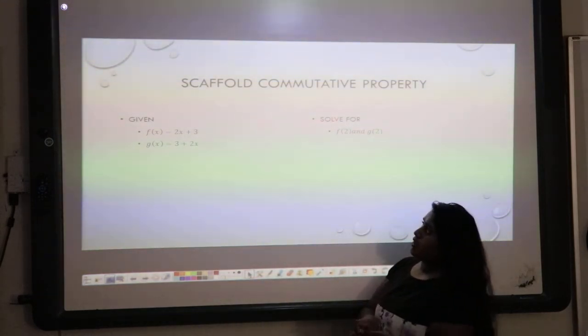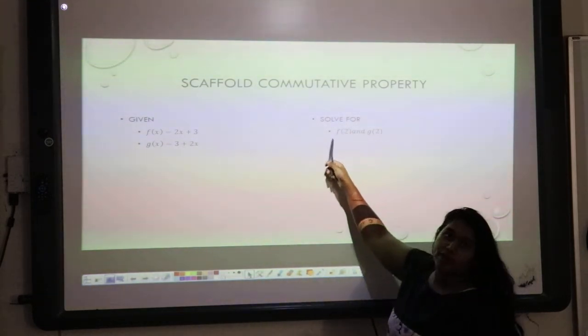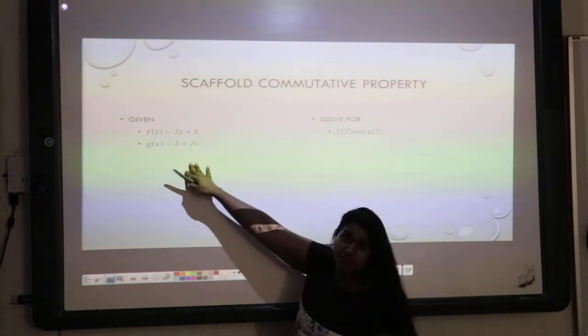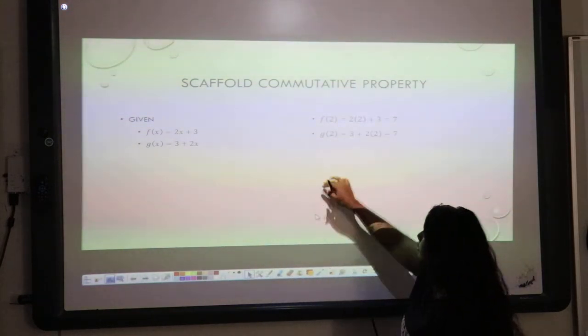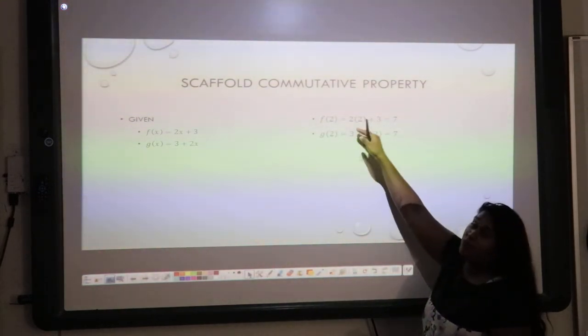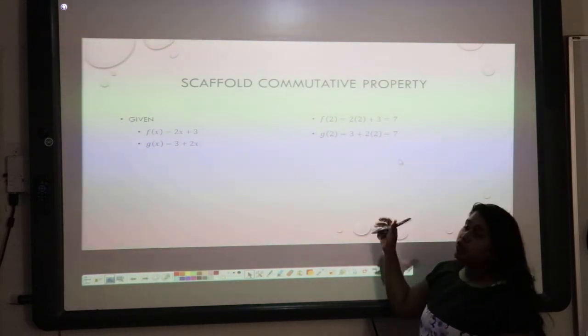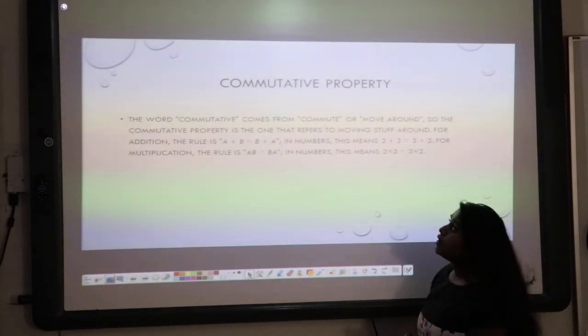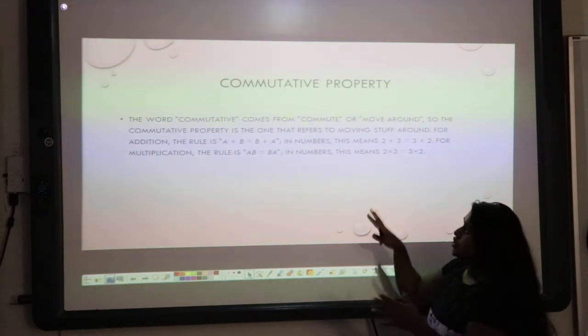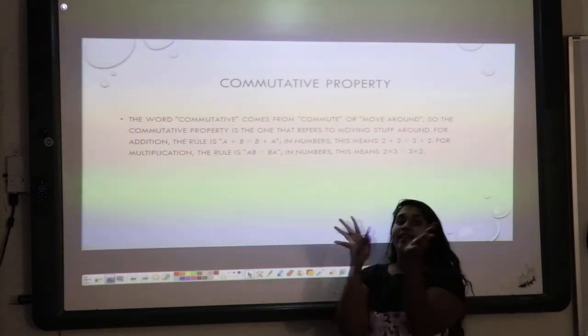Just a reminder about our commutative property. If we solve for f of 2 and g of 2, given these functions over here, what is that going to look like? So when we plug that in, we get 7. When we plug that in, we get 7.